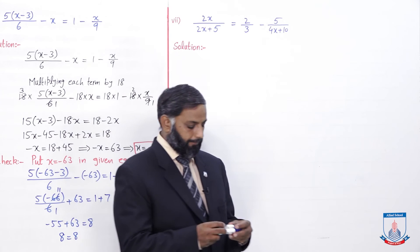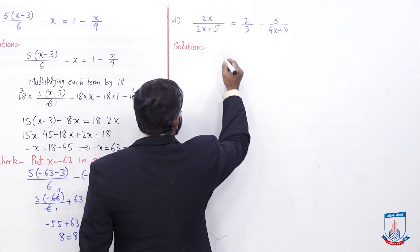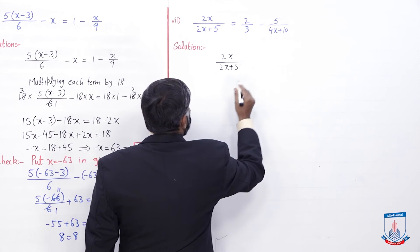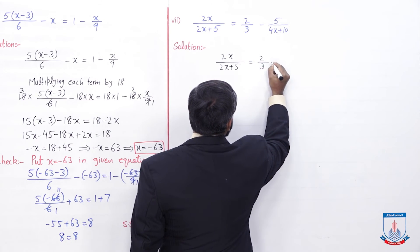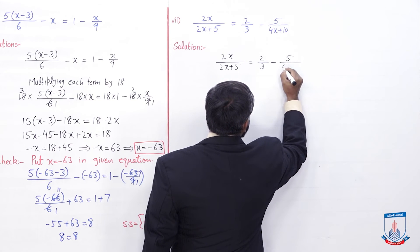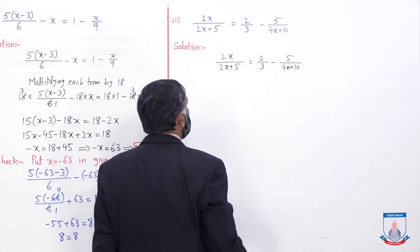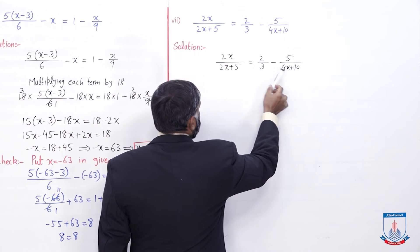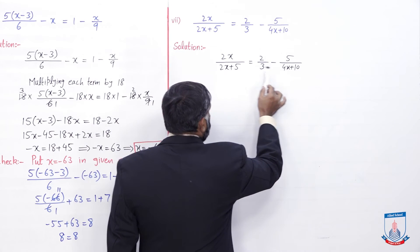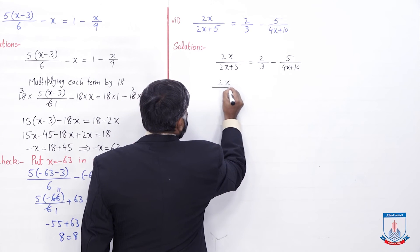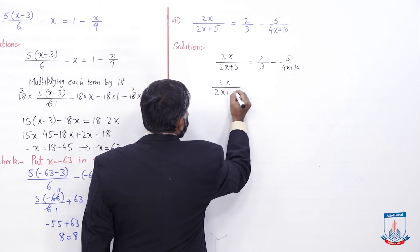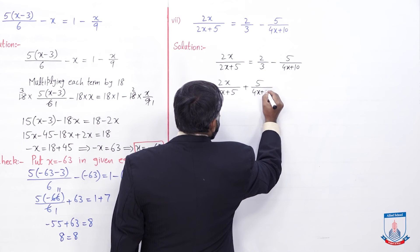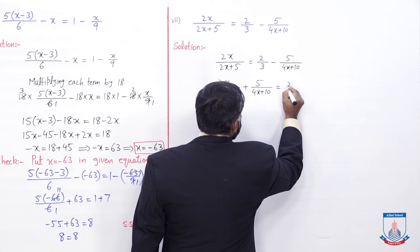Isi question ka 7th part solve karte hain: 2x over (2x plus 5) is equal to 2/3 minus 5 over (4x plus 10). Yahan par jo denominator mein expressions hain, isliye expressions wali values ek side par ekatthe kar lenge. Yeh negative sign ke saath hai, left side par aakar positive ho jayegi: 2x over (2x plus 5) plus 5 over (4x plus 10) is equal to 2/3.